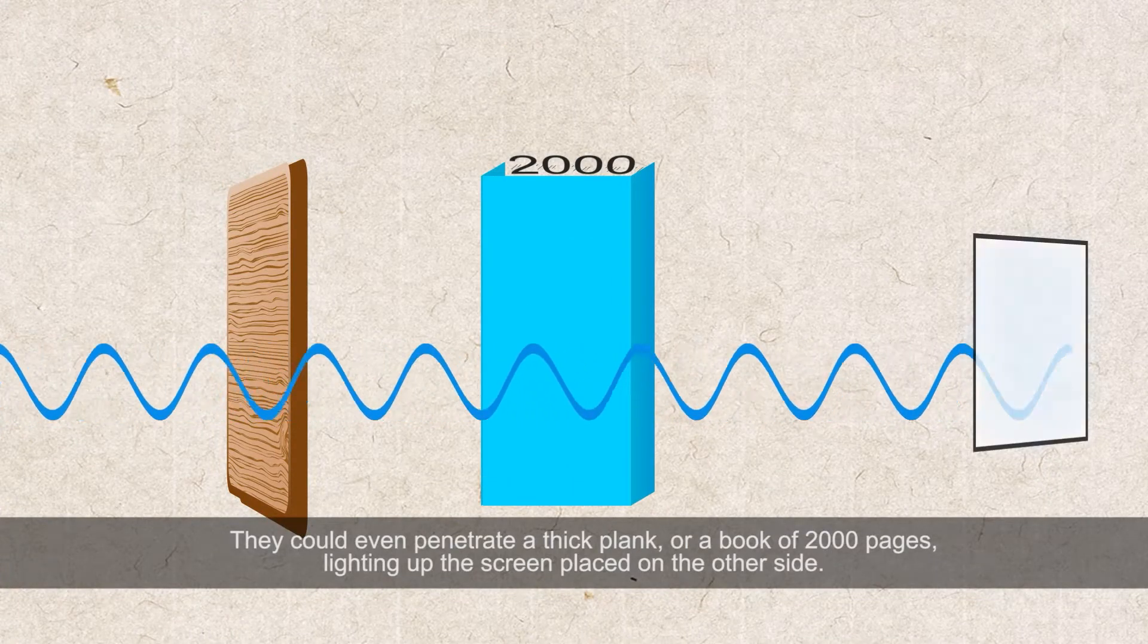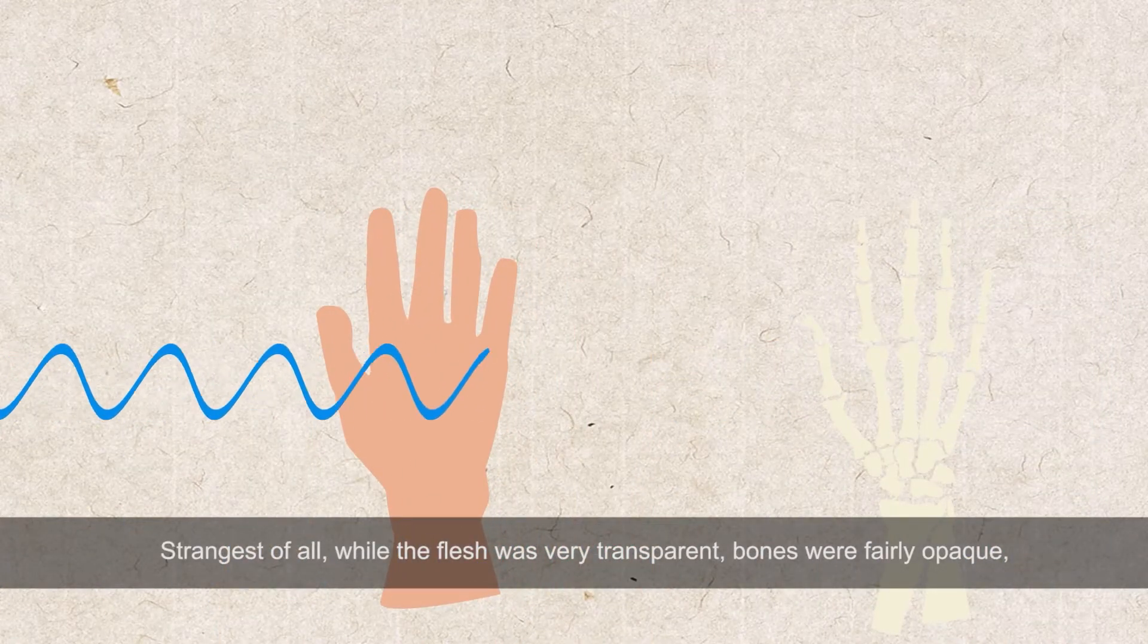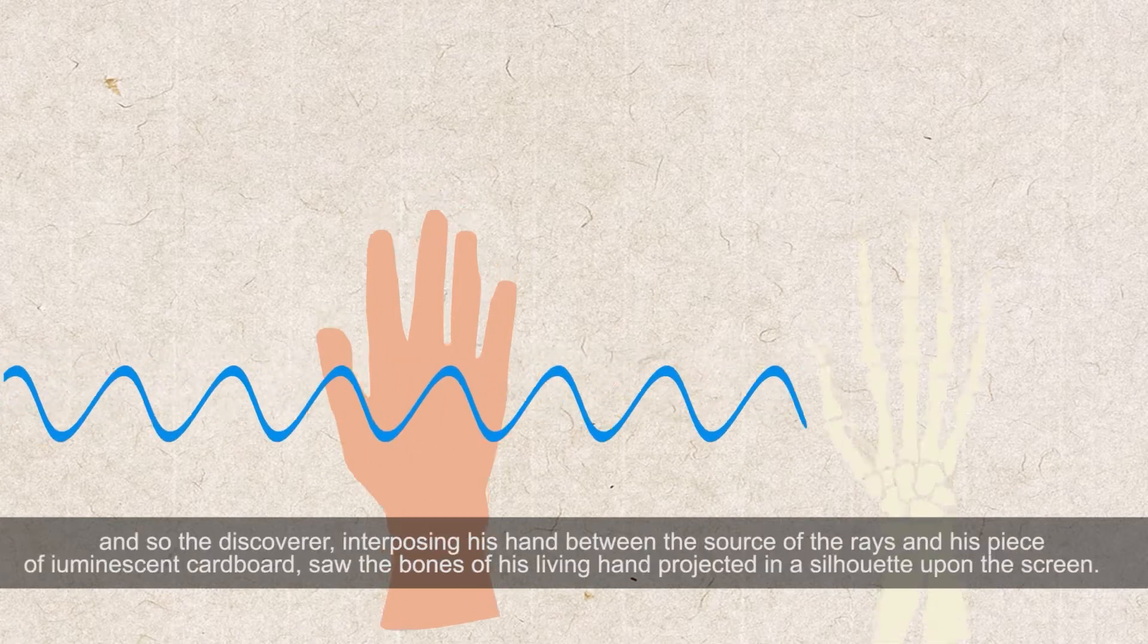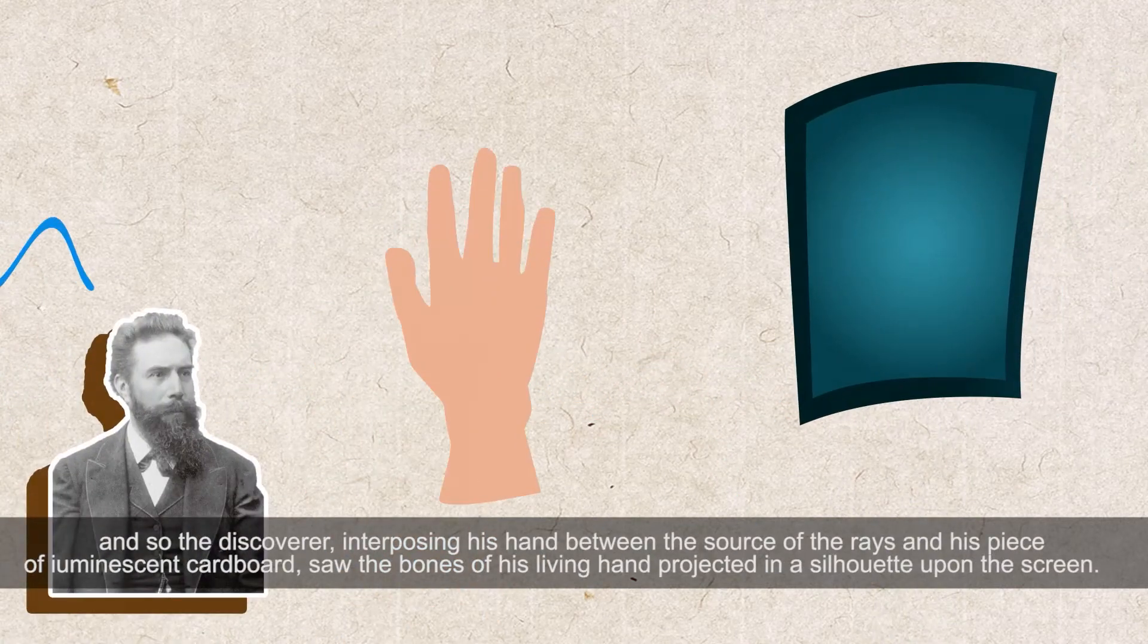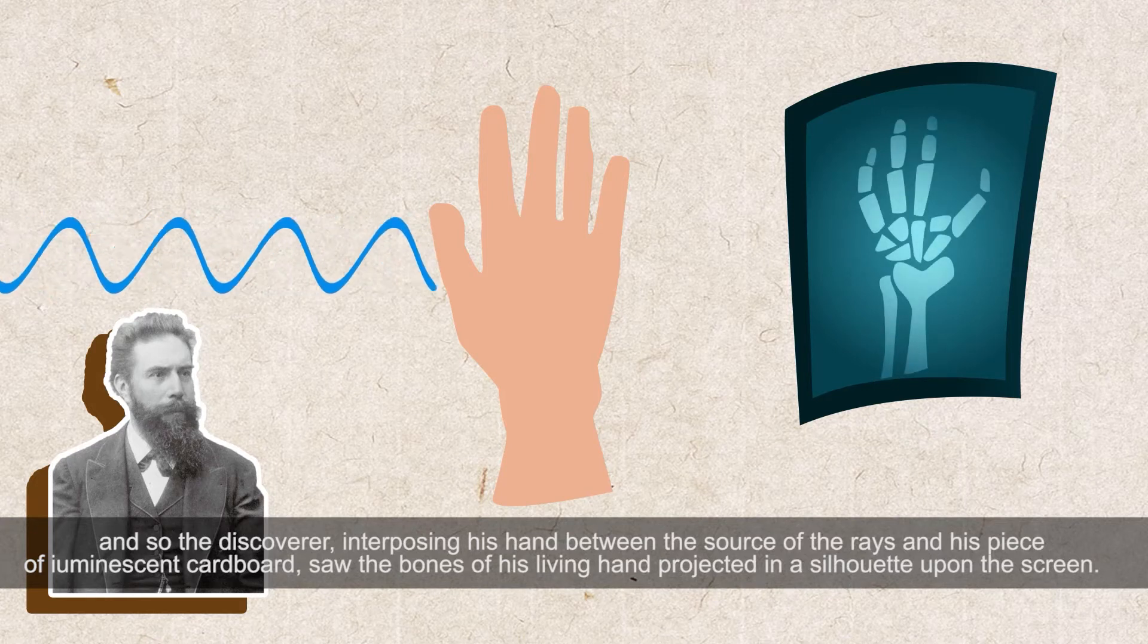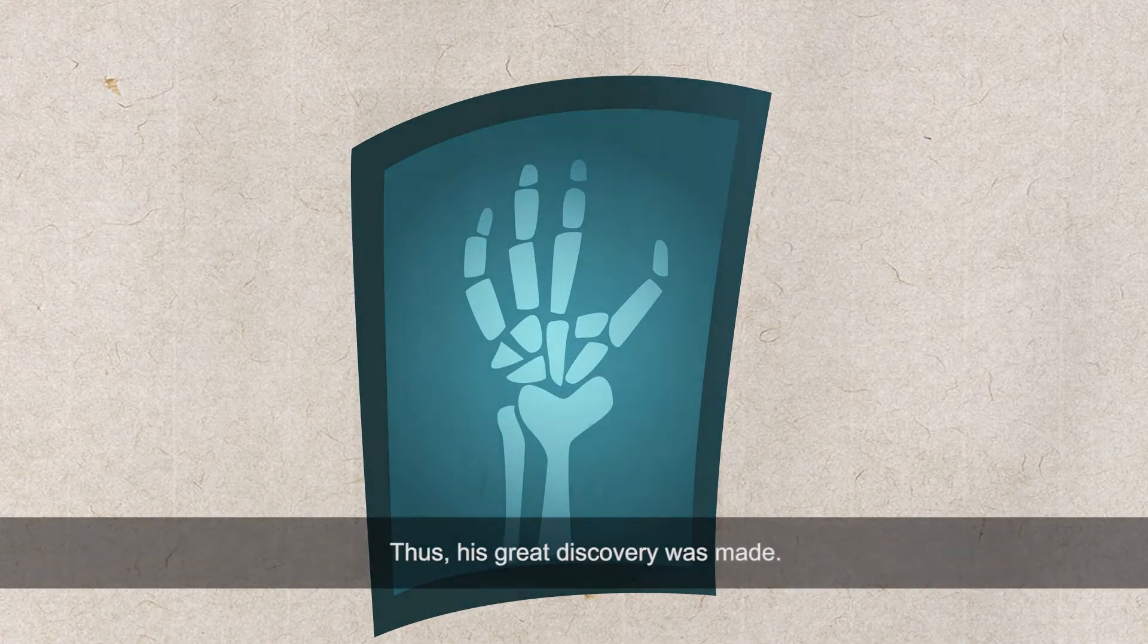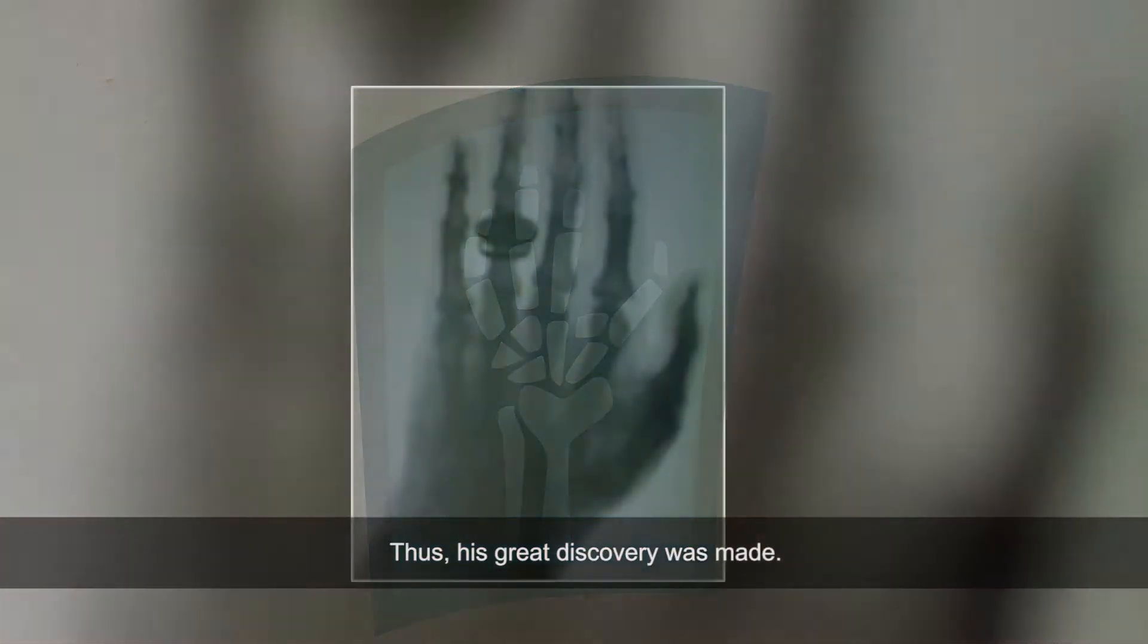Strangest of all, while the flesh was very transparent, bones were fairly opaque. And so the discoverer, interposing his hand between the source of the rays and his piece of luminescent cardboard, saw the bones of his living hand projected in a silhouette upon the screen. Thus his great discovery was made.